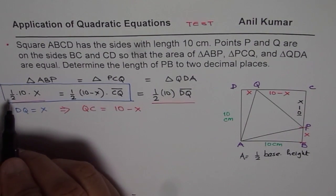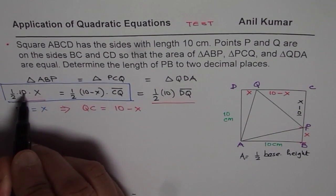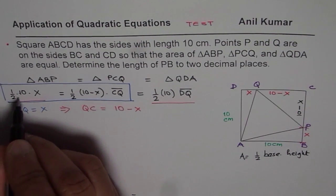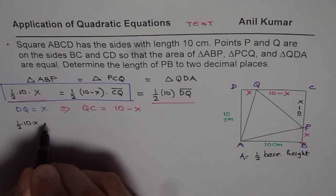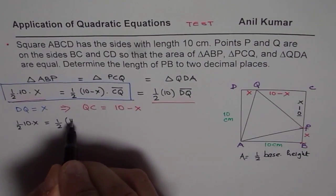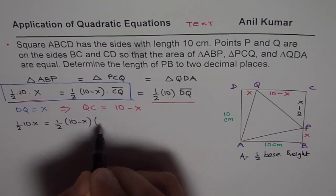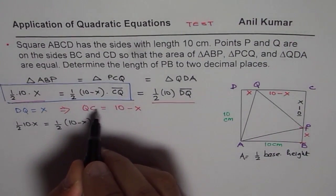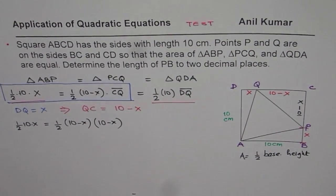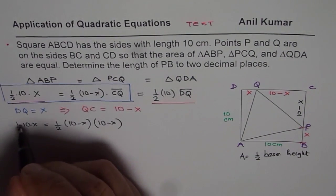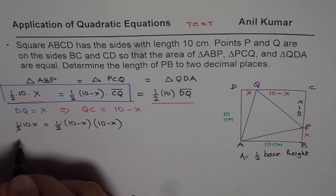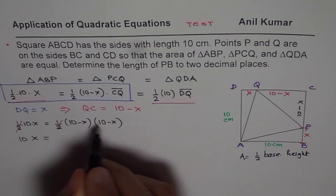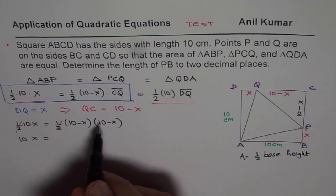So what we are given here is half of 10 times X is equal to half of 10 minus X times CQ or QC, which is 10 minus X. So both are same. So you can simplify this, so it is like half and half can cancel. So you get 10X equals to 10 minus X whole squared.